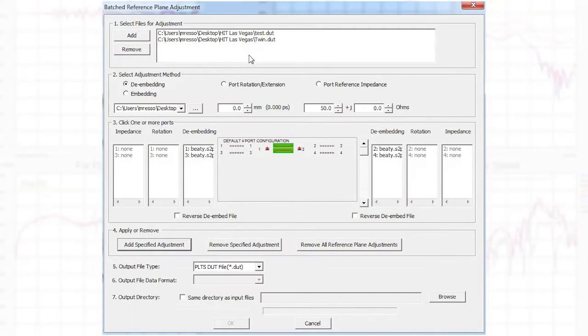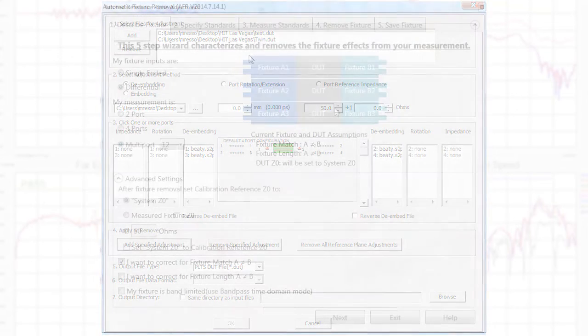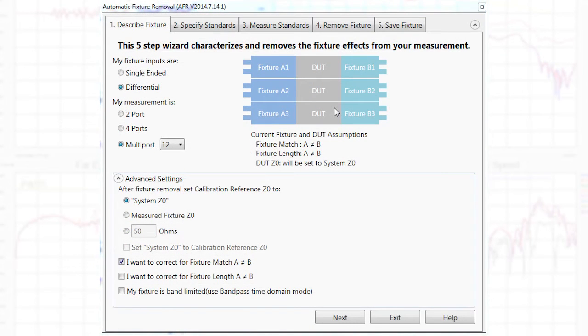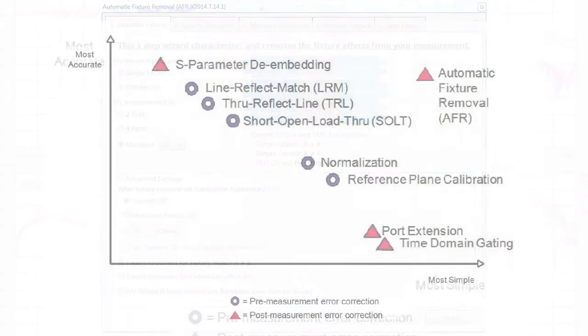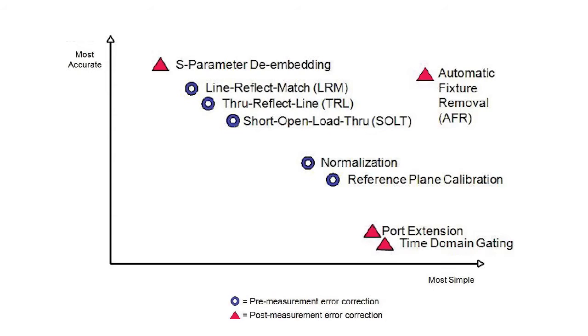We can have PLTS perform post-measurement air correction in batch mode to remove any test fixtures using automatic fixture removal, gating, de-embedding, port rotation, or a multitude of other air correction techniques.